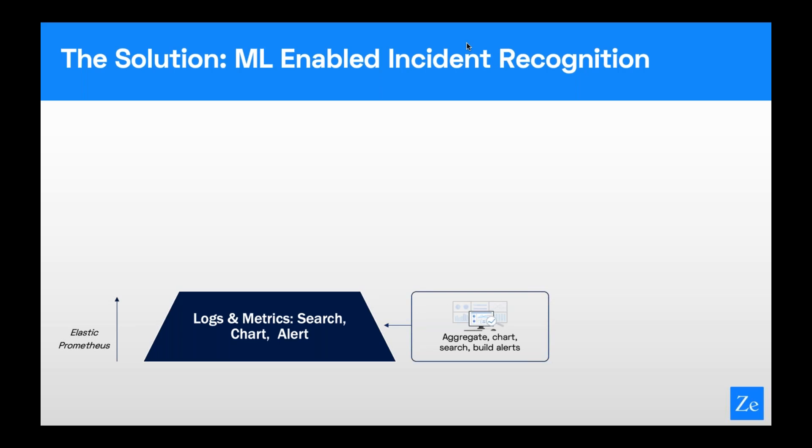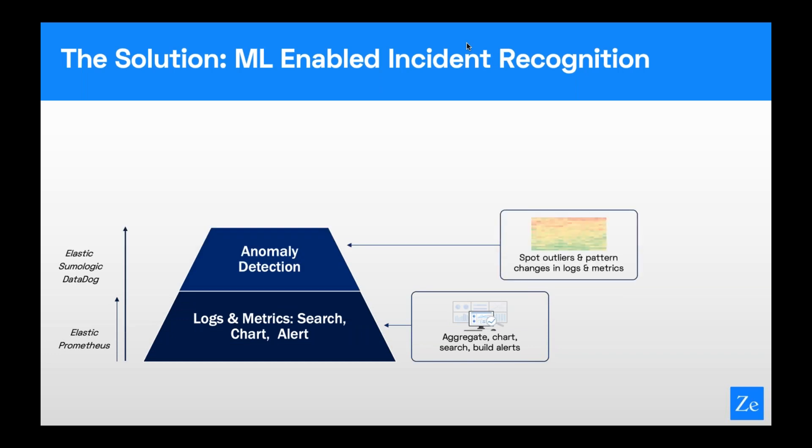The solution is to apply some of the techniques of modern machine learning to assist a person by showing them what to look at. Rather than expecting an SRE or DevOps person to instrument detection for all kinds of unknown unknowns — which is an unreasonable expectation — let's help with that. Most tools today let you ingest your telemetry, your logs and metrics, and you can search, set up alerts, and chart. But it was clear we needed to go beyond that.